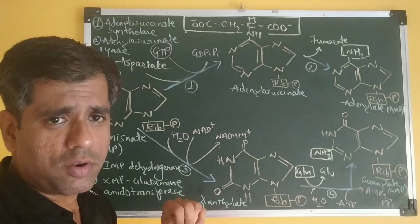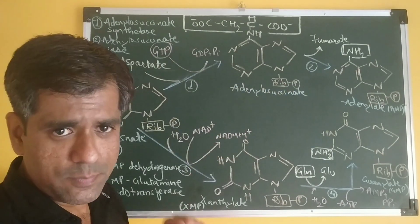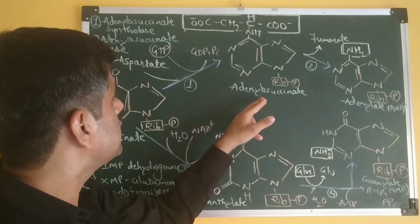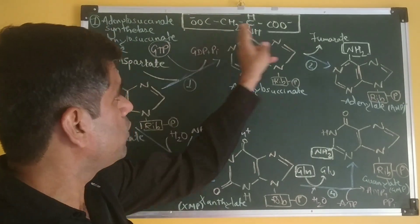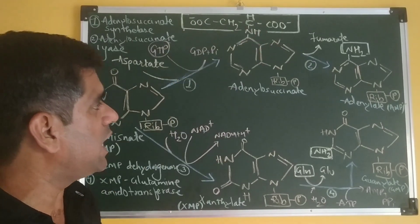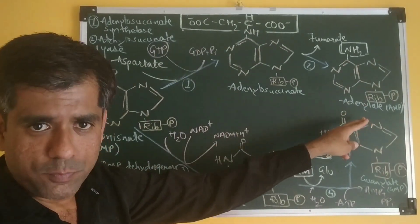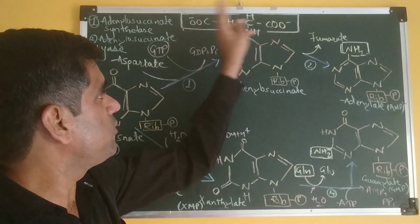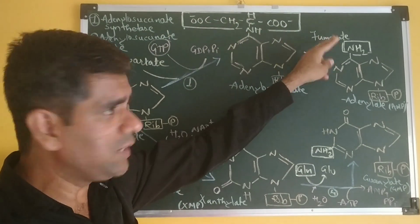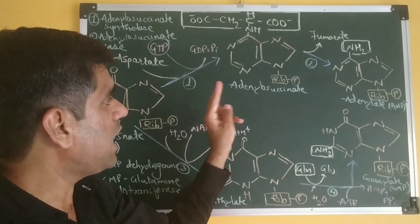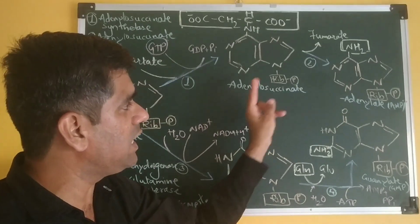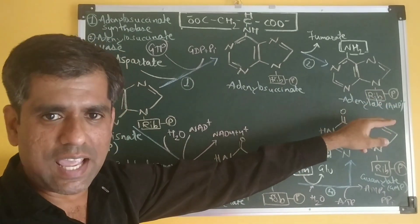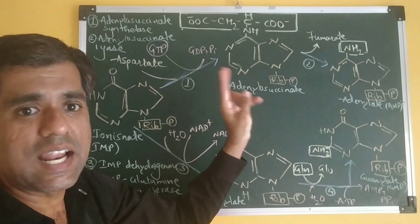Adenylosuccinate is then acted upon by adenylosuccinate lyase. This enzyme removes the carbon skeleton of aspartate, leaving the amino group to form adenylate. The carbon skeleton is removed as fumarate, while the amino group remains. Adenylosuccinate is finally converted to adenylate, that is AMP, by adenylosuccinate lyase.